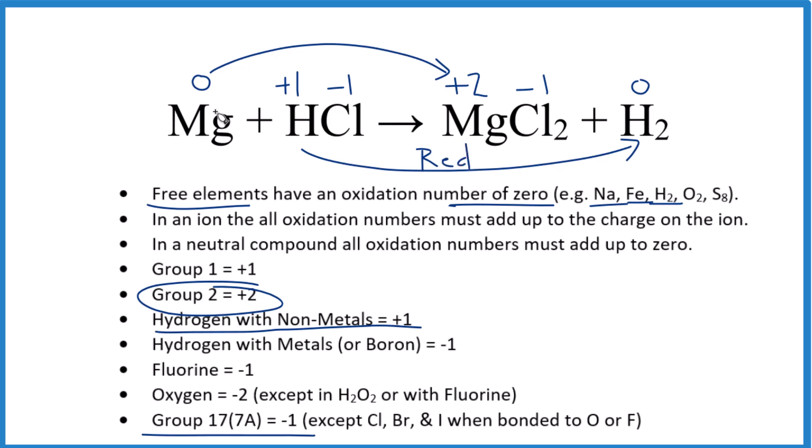That means that the magnesium, this number, the oxidation number got larger. That was oxidized. So we lost electrons and we gained electrons. That's redox.